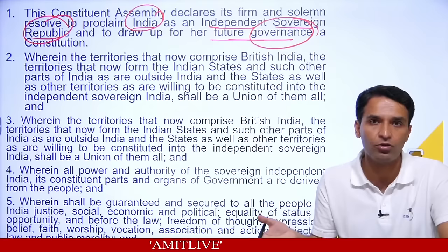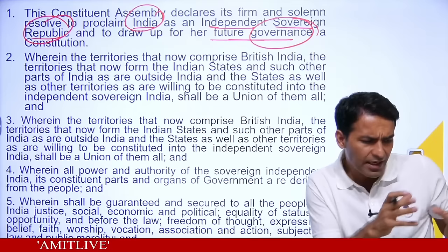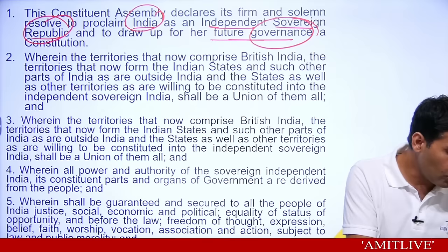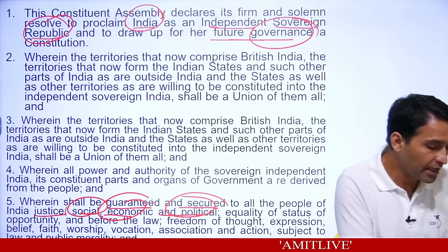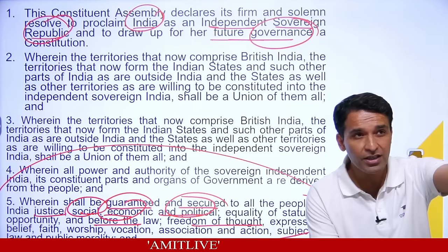This Objectives Resolution became the base of the preamble of the final constitution. The Constituent Assembly would try to guarantee and secure justice — social, economic, and political — equality of status and opportunity, freedom of thought and expression. These same things are in our preamble. It was a vision, a lighthouse — this was the target, the destination for the Constituent Assembly, as given in the Objectives Resolution.